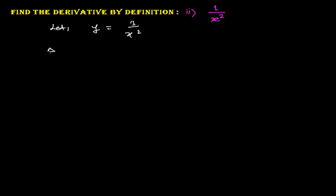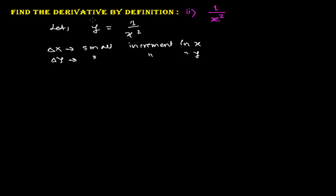So I will suppose delta x is a small increment in x, and delta y is also a small increment in y. So now, this equation y equals 1 over x squared will turn into: y plus delta y equals 1 over (x plus delta x) whole squared.